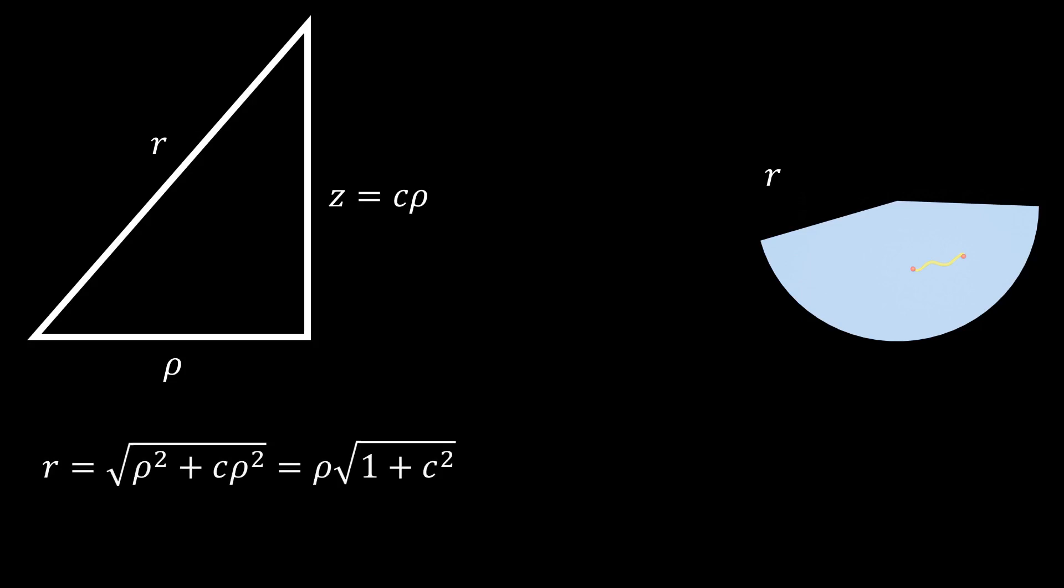We can understand this a little better if we look at the distance along the wedge, r. If we look at our cone from the side and pick a point on it, we can visualize a right triangle where the distance from the vertex to the point is r, which has a horizontal component rho and a vertical component z, which is equal to c rho. Then r becomes rho times the square root of 1 plus c squared.